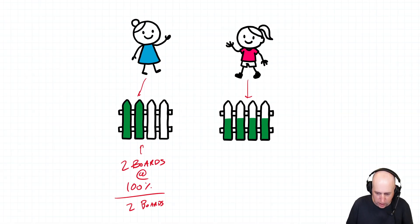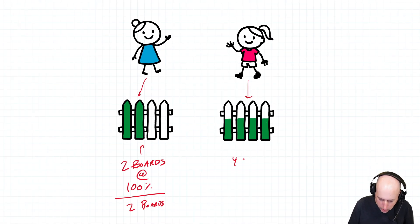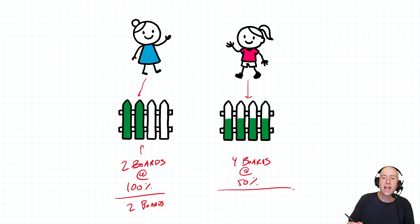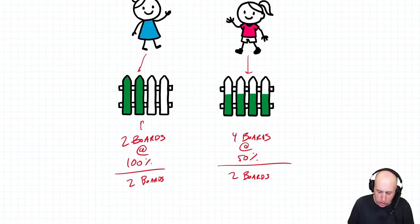Bianca had done four boards that were at 50% completion. And if we do the math, four times 0.5, four times 50%, that is the equivalent of two boards, but we wouldn't call it two boards. We would call it two equivalent boards.